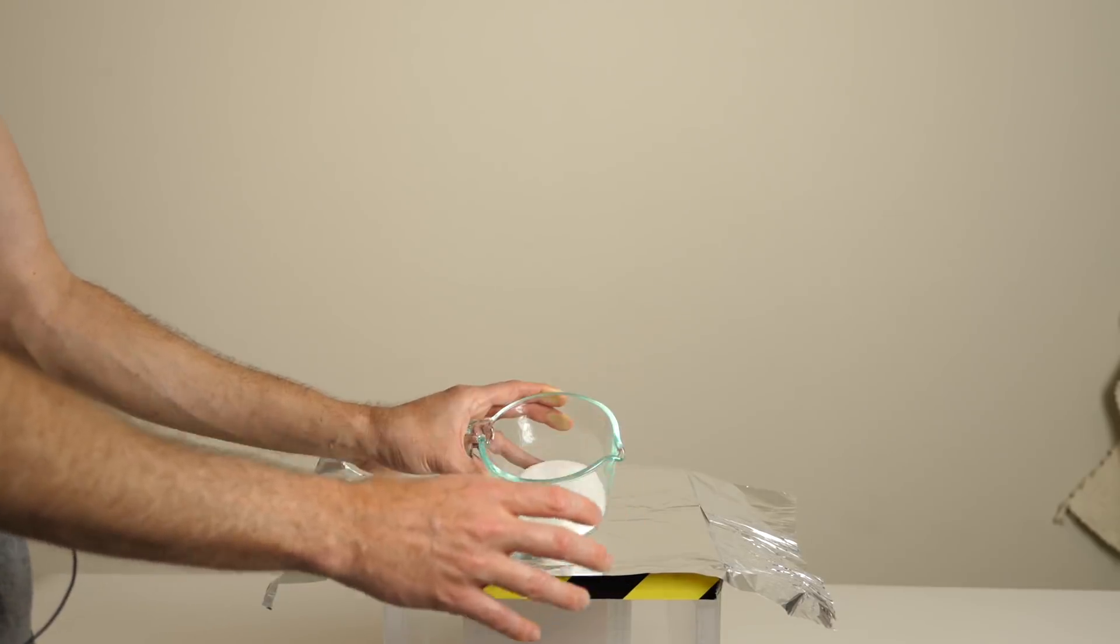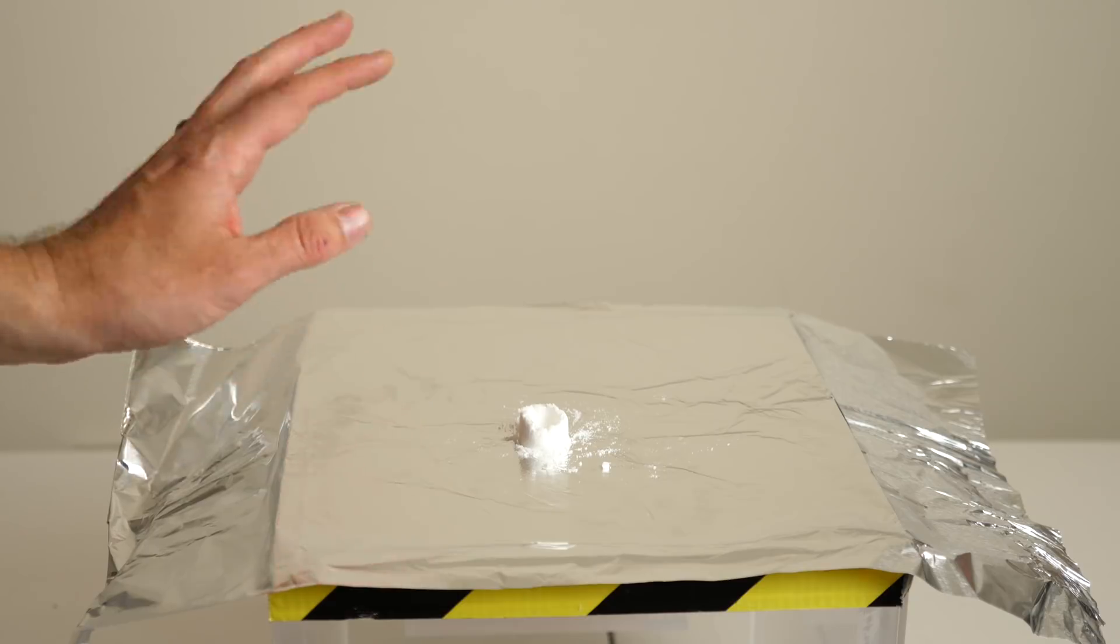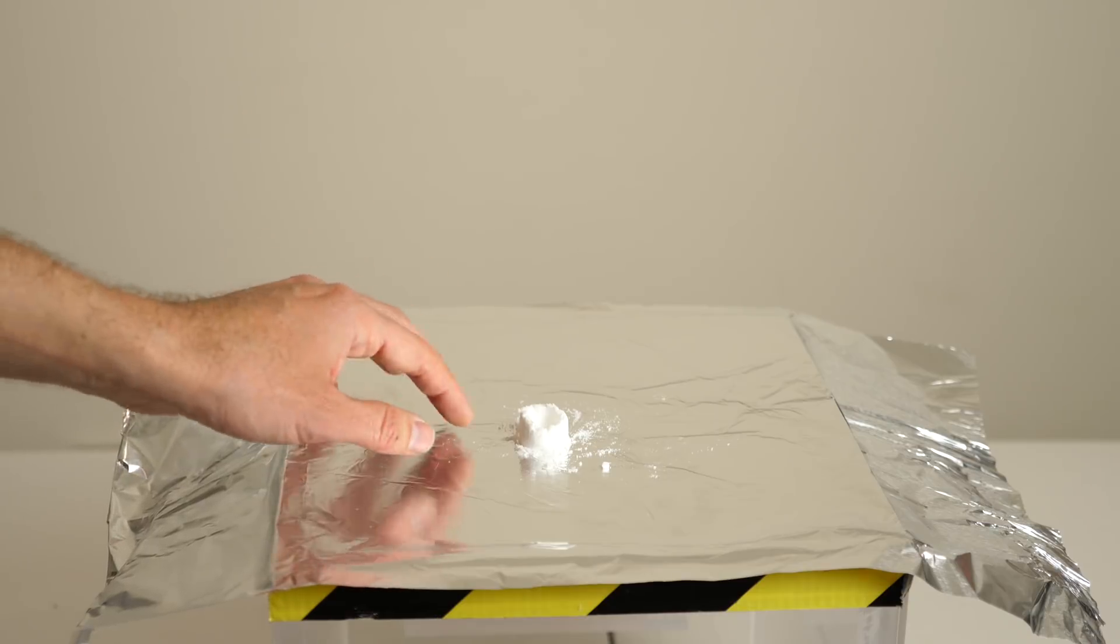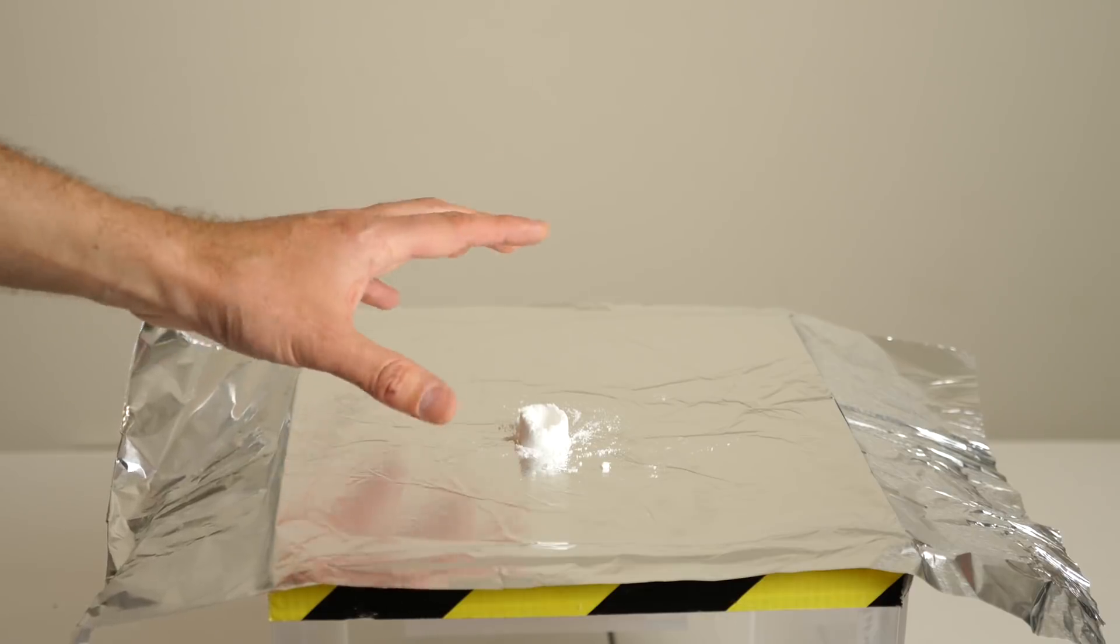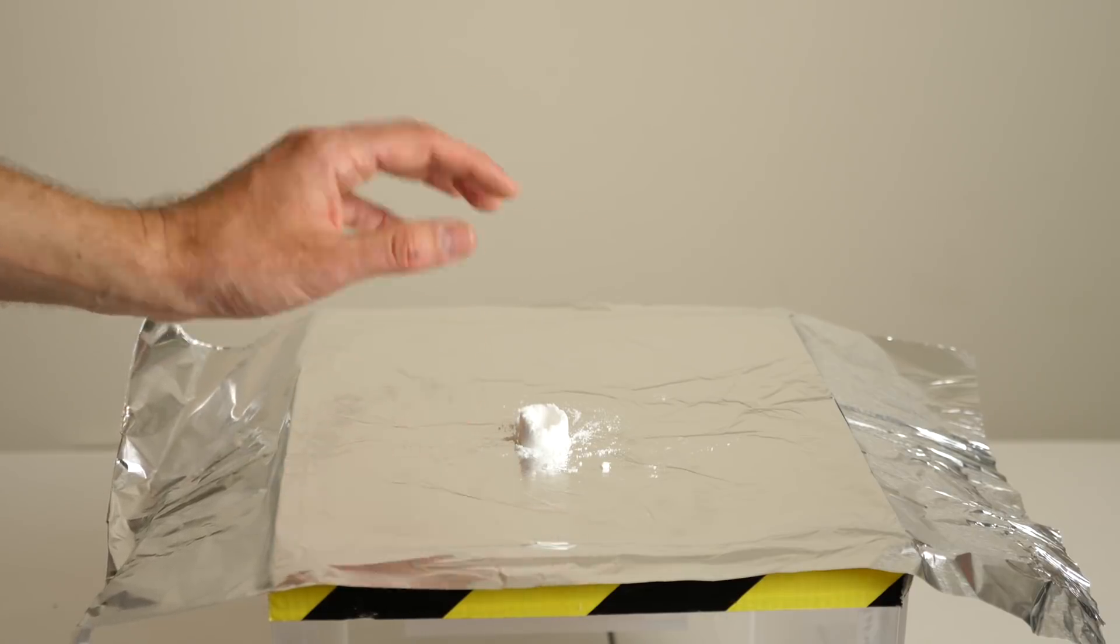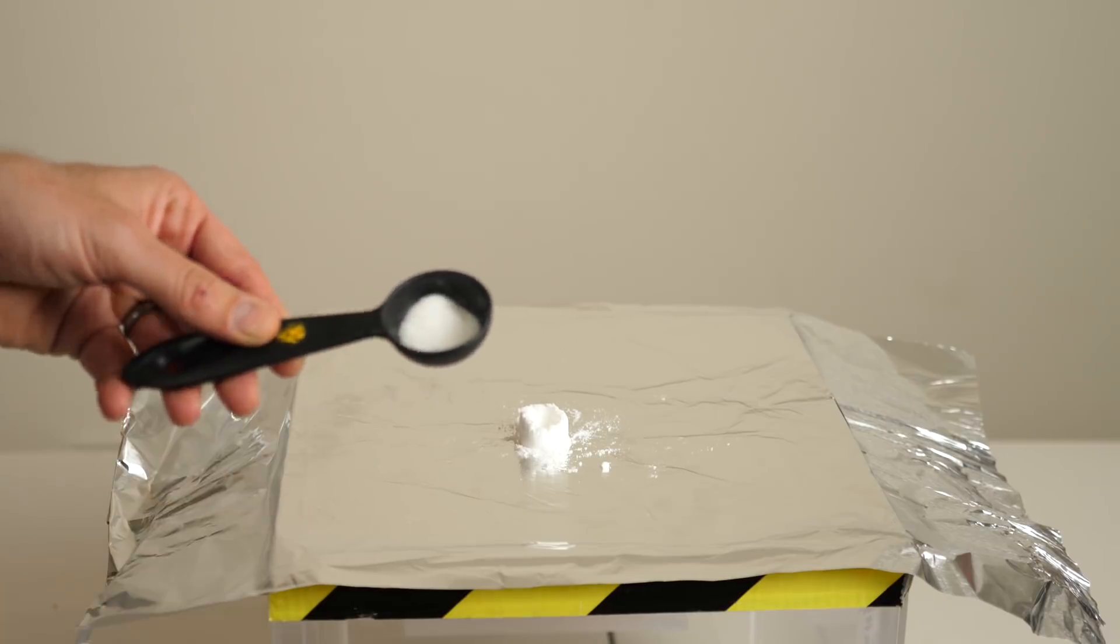So watch what happens when you burn sugar mixed with baking soda. Okay, so this powder I have here is just called hexamethylene tetramine and it's just a solid fuel. It just burns when you light it. So this doesn't really have anything to do with the reaction, it's just to burn the sugar.